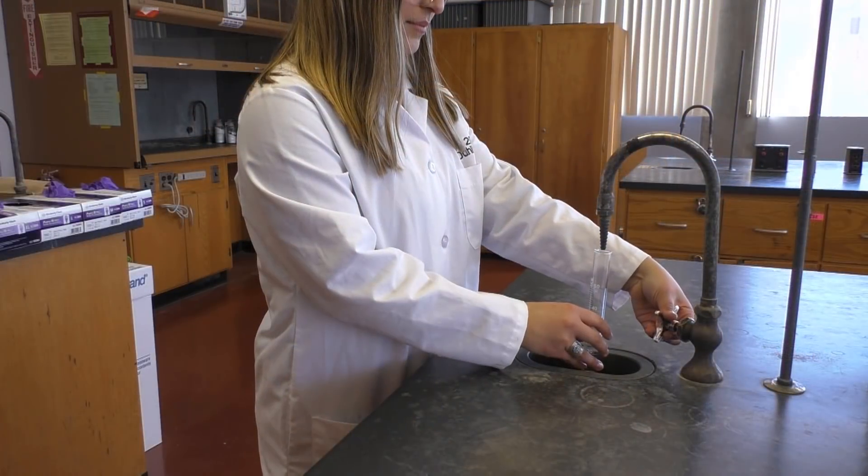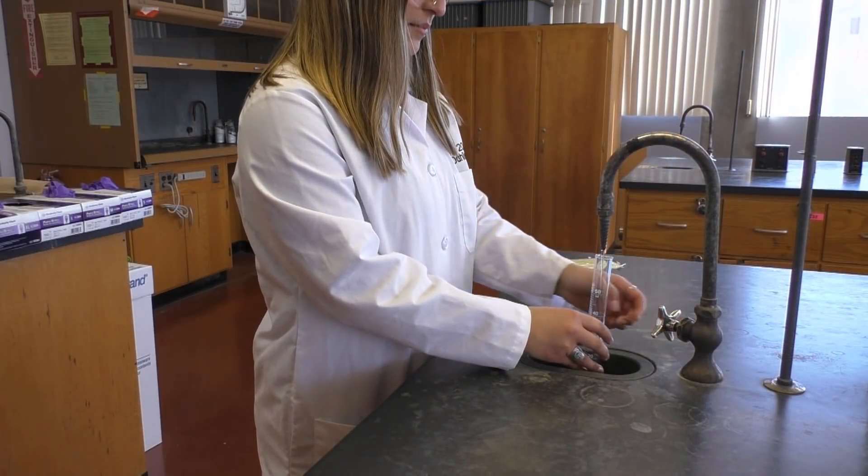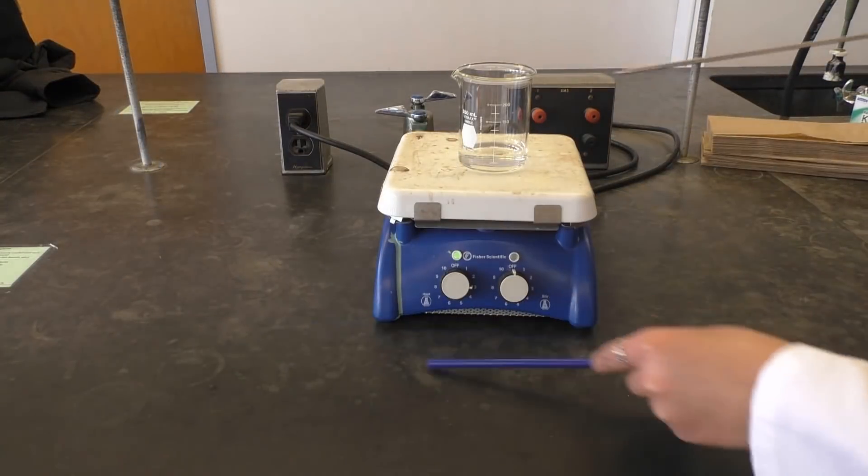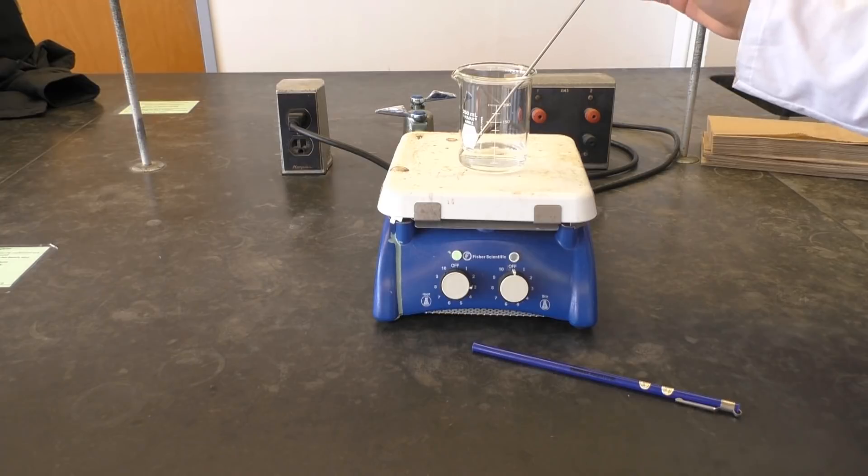While your water is equilibrating, you need to obtain some hot water. So measure out another 50 mL sample of DI water and heat it on a plate until it reaches between 60 and 70 degrees Celsius.